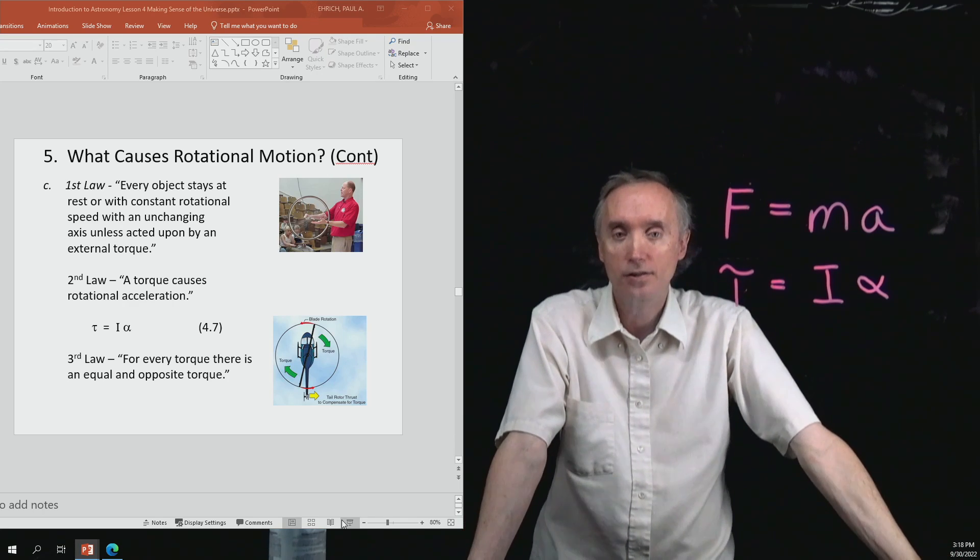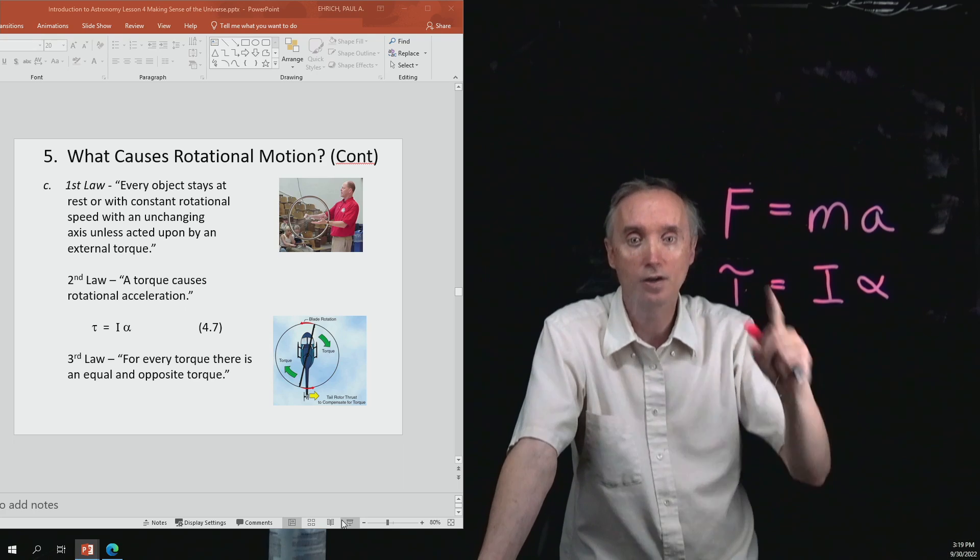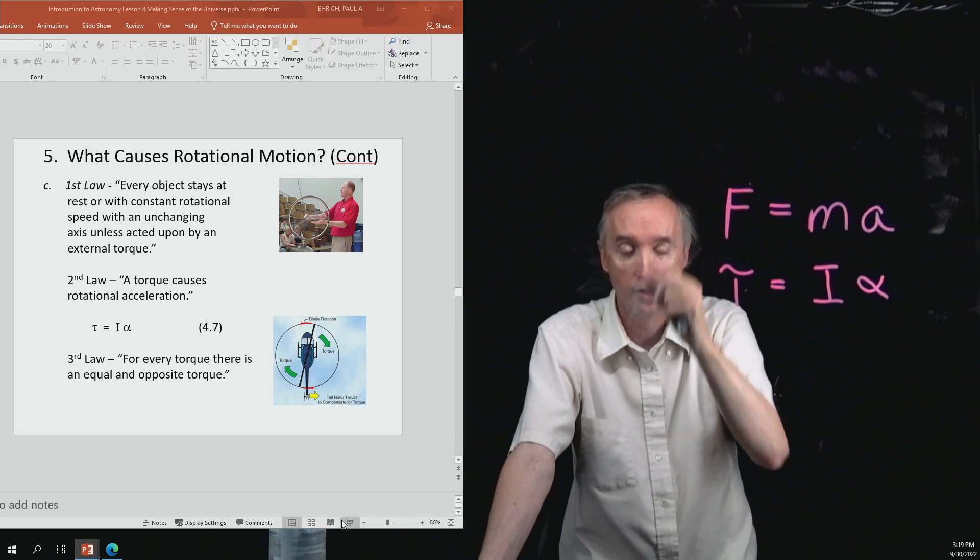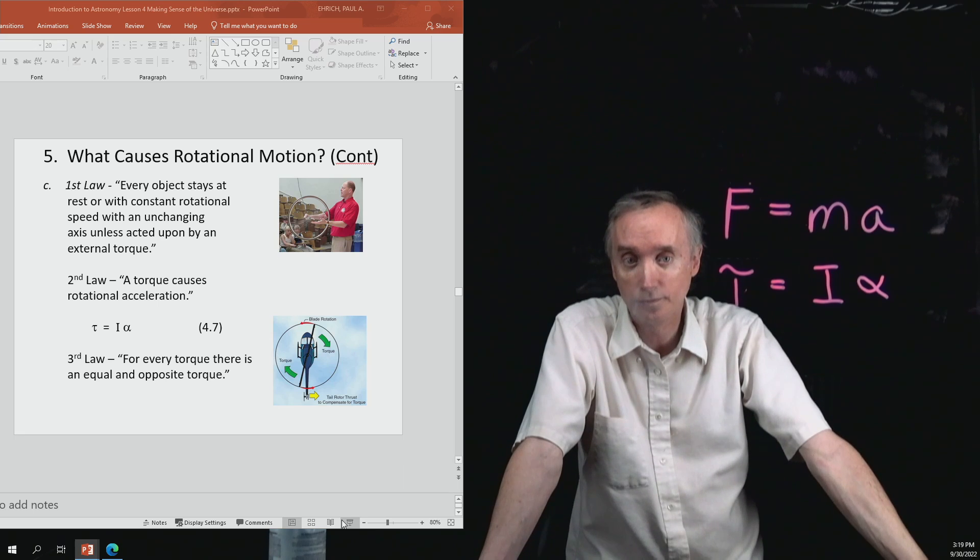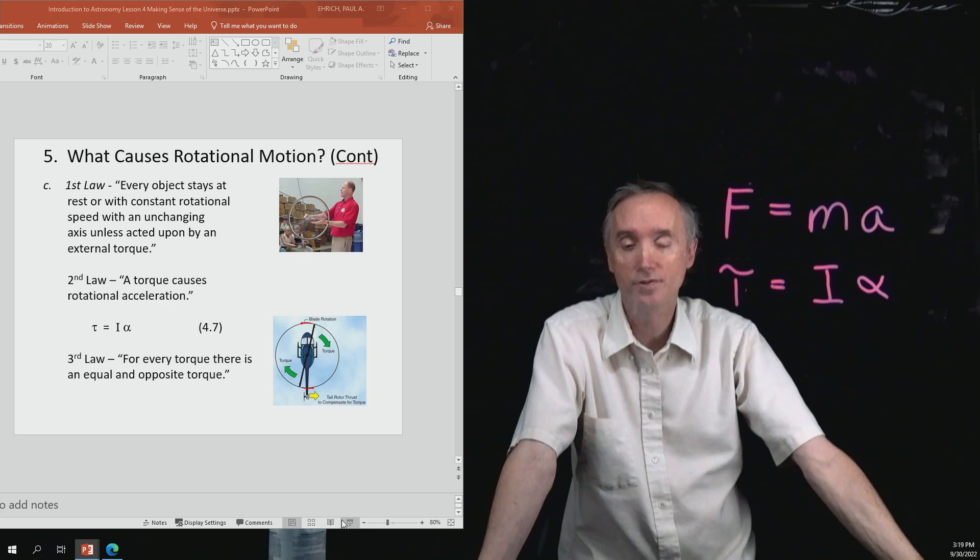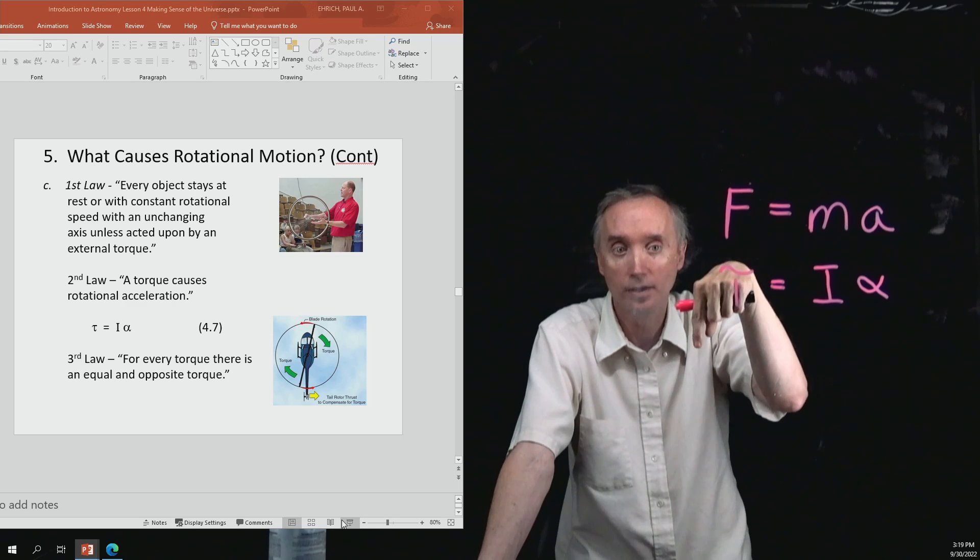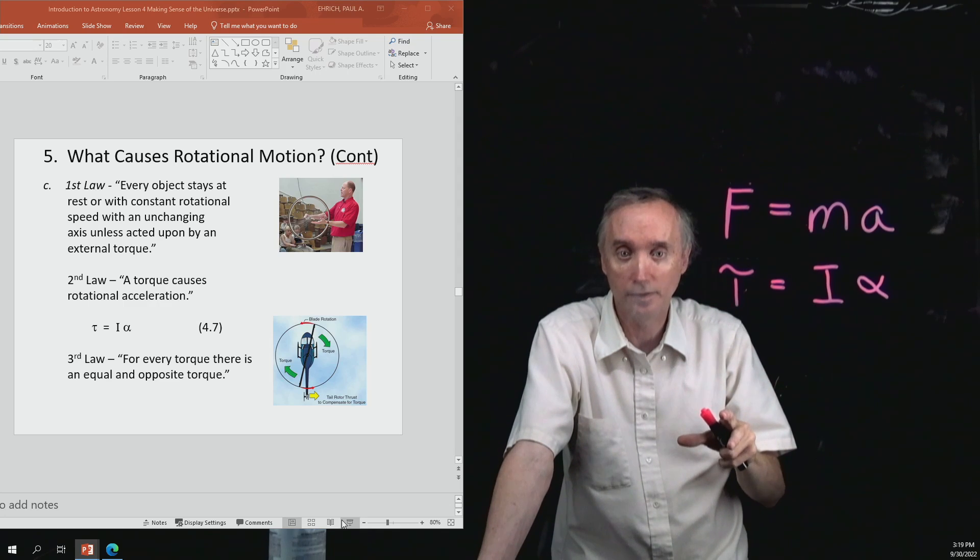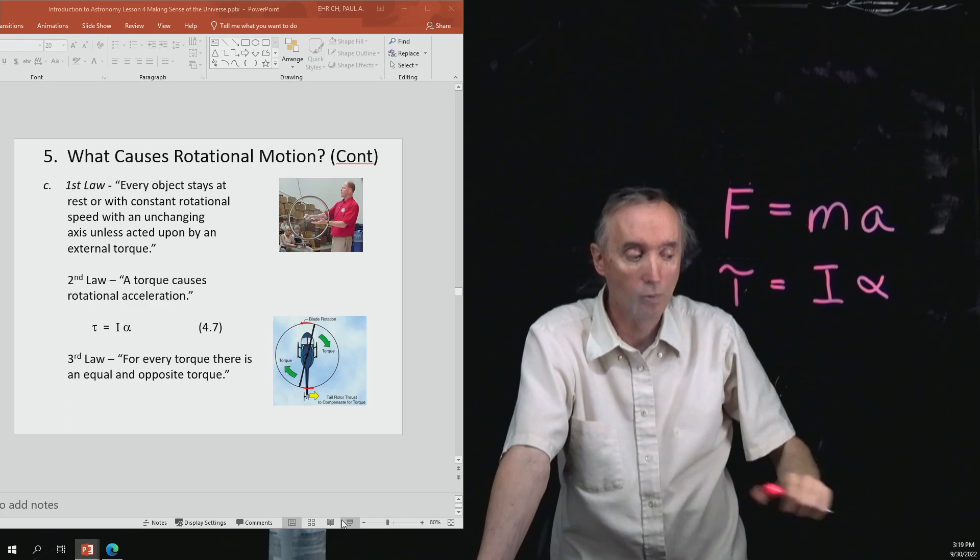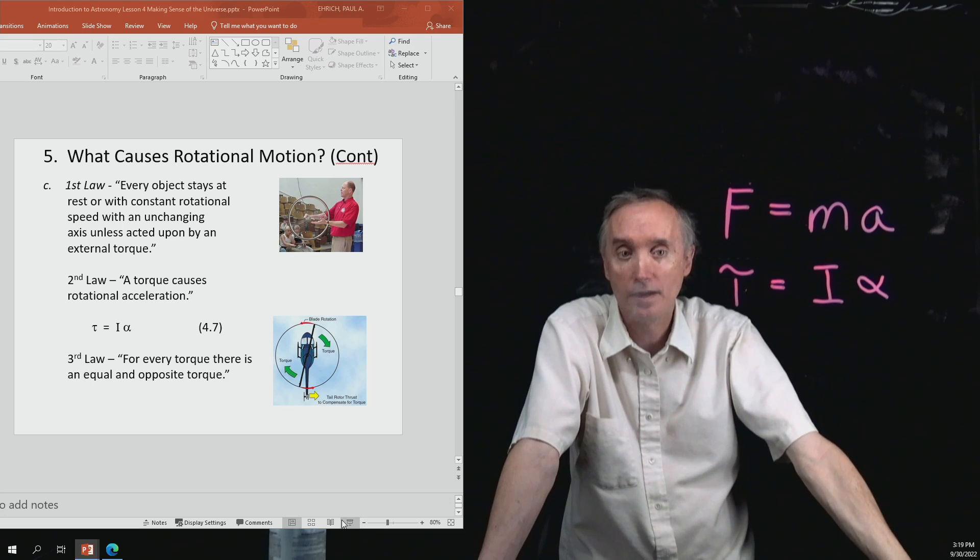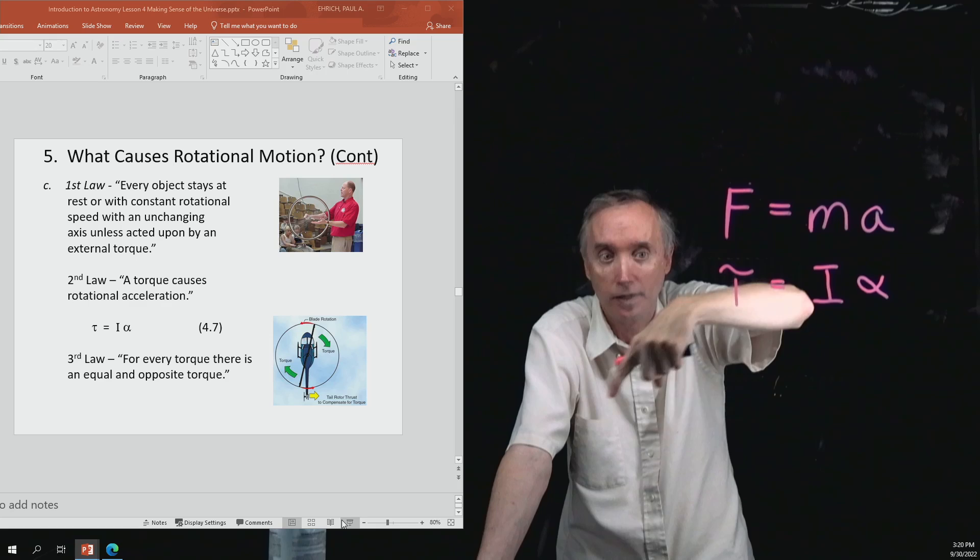And this has a really interesting application when it comes to helicopters. So the engine on a helicopter provides a torque that causes the blade to go around in a certain direction. But according to Newton's third law, the blade must be applying a torque on the helicopter in the opposite direction. So the helicopter is providing a torque on the blade, making it go around. The blade will apply a torque on the helicopter. So if there was nothing stopping it, a helicopter would spin in the opposite direction that the blades would be going around in. So what is it that stops that from happening? Helicopters have tail rotors. And that tail rotor provides a counter torque that keeps the helicopter from spinning in the opposite direction.